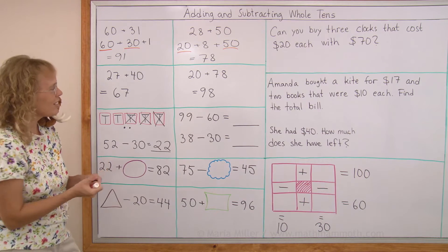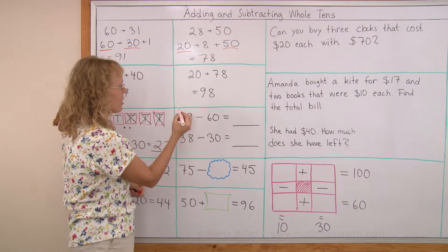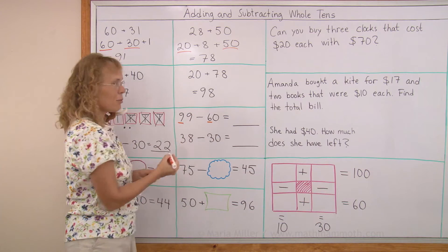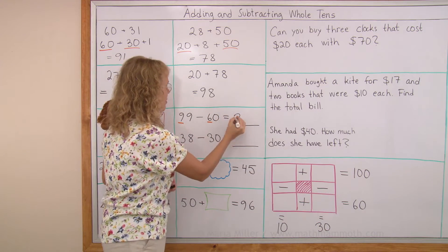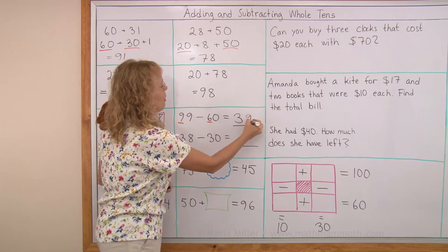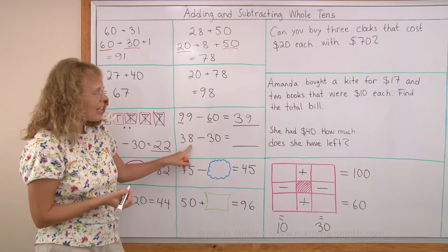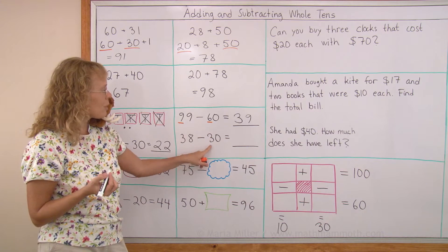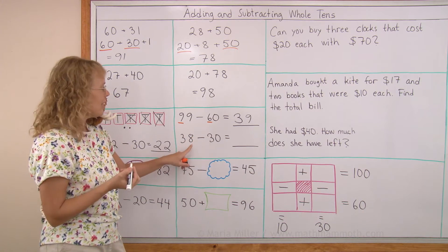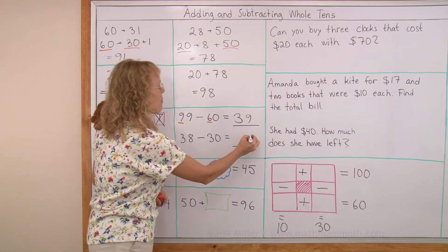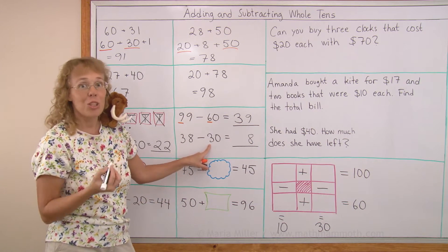So that's the shortcut here. You're subtracting 6 whole tens. Just think of the 9 tens take away 6 tens — that would be 3 tens left. And then 9 ones. 38 minus 30: this 8 will not change because you are subtracting or taking away whole tens. These ones will not change. And then 3 tens take away 3 tens leaves no tens.